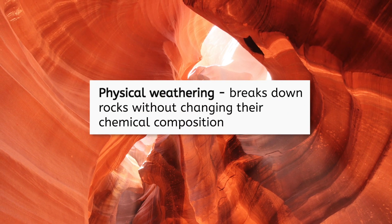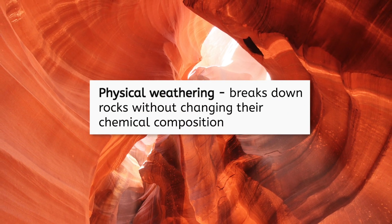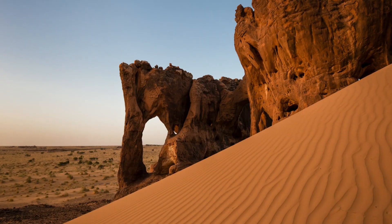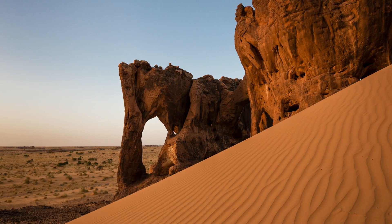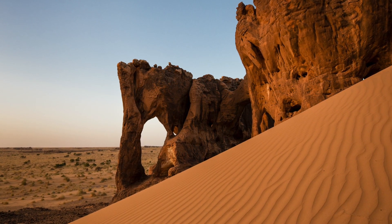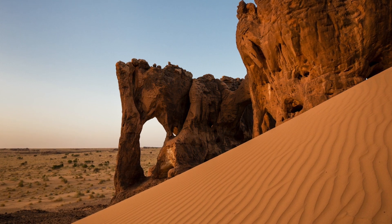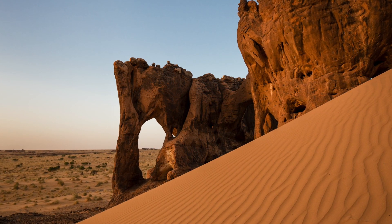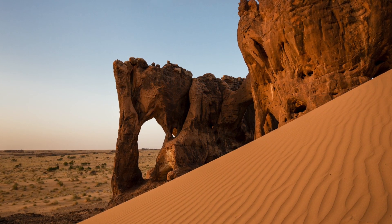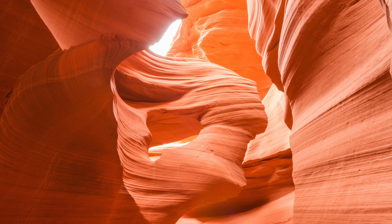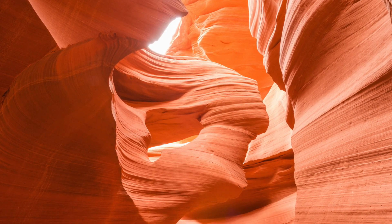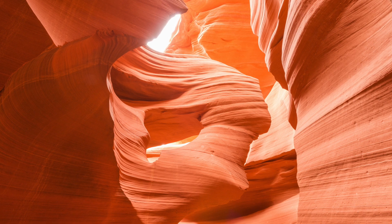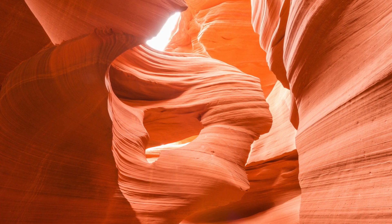Physical weathering breaks down rocks without changing their chemical composition. A common example of physical weathering is wind. In deserts and other open areas, wind can pick up small particles of sand and dust. These particles act like sandpaper, grinding against larger rocks and wearing them down over long periods of time.